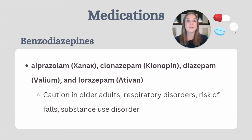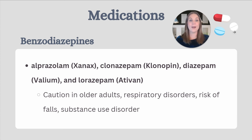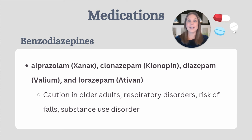Benzodiazepines are a class of very effective anxiolytic medications. However, they also can carry some pretty serious side effects and are considered a controlled substance. Some of the common benzodiazepines include alprazolam or Xanax, clonazepam or Klonopin, diazepam or Valium, and lorazepam or Ativan. These medications are fast-acting but have varying half-lives. Alprazolam or Xanax would be the shortest-acting, while clonazepam or Klonopin has a half-life of 40 hours.